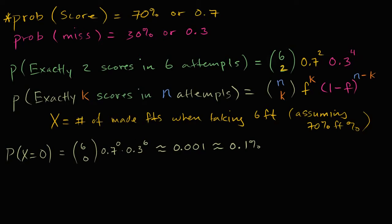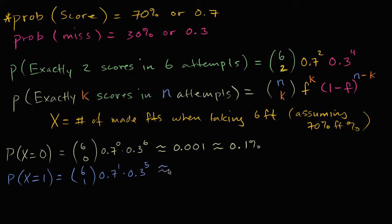So what is the probability that our random variable is equal to one? This is going to be six choose one, times 0.7 to the first power, times 0.3 to the fifth power. This is approximately 0.01, or about one percent — ten times more likely than missing all shots, but still a fairly low probability.